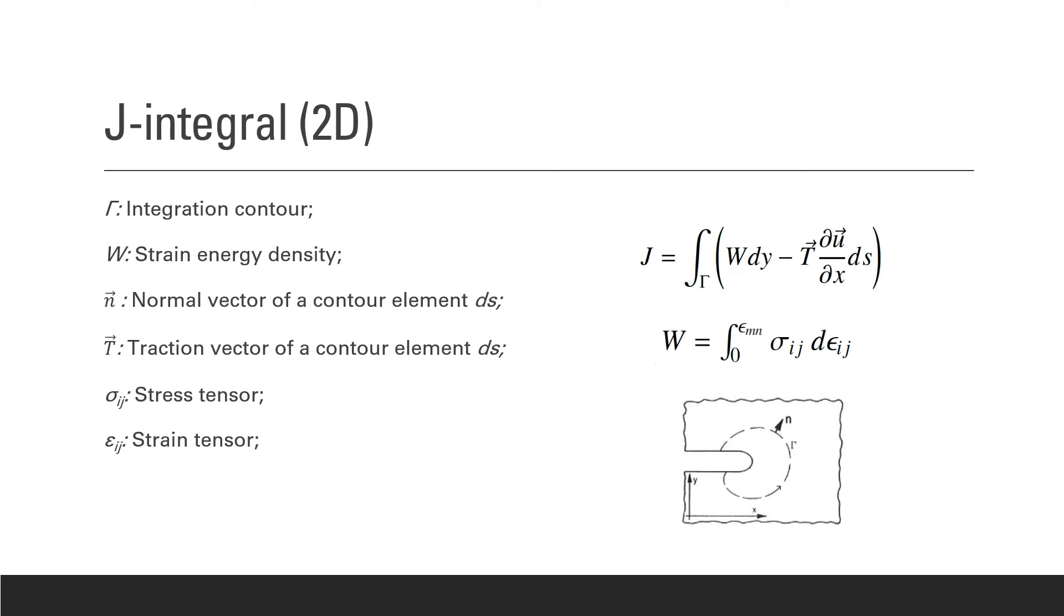So now I'm going to give a quick refresh on the J integral. In the context of linear elastic fracture mechanics, the calculation of the J integral is just another way to calculate the strain energy release rate G, which in turn can be used to determine the stress intensity factor. So in linear elastic fracture mechanics, G equals J.